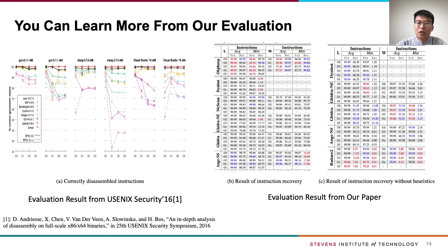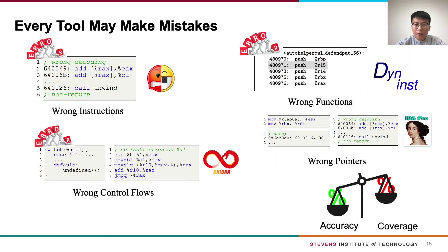From our evaluation, you can learn not only overall results but also more detailed results. For example, sub-figure A shows the evaluation result from a prior USENIX Security '16 paper about instruction recovery — it only shows overall results. In our evaluation, we not only present overall results as shown in sub-figure B, but also show the results of instruction recovery without heuristics. From those results, you can conclude more detailed information, such as how many instructions are introduced by heuristic strategies. We found that every tool makes mistakes to some degree in every task, because disassemblers use many heuristic strategies to reach high coverage — there exists a trade-off between high accuracy and high coverage.